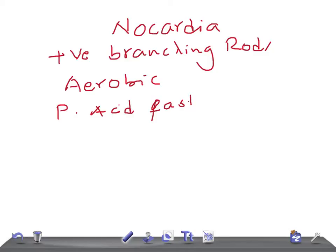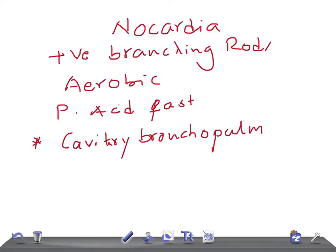The most important thing for USMLE Step 1 and Step 2 CK examination is to remember cavitary bronchopulmonary disease. There are two types of Nocardia: Nocardia asteroides and Nocardia brasiliensis. Nocardia asteroides causes a pulmonary lesion — cavitary bronchopulmonary disease — and Nocardia brasiliensis causes a skin manifestation known as mycetoma.